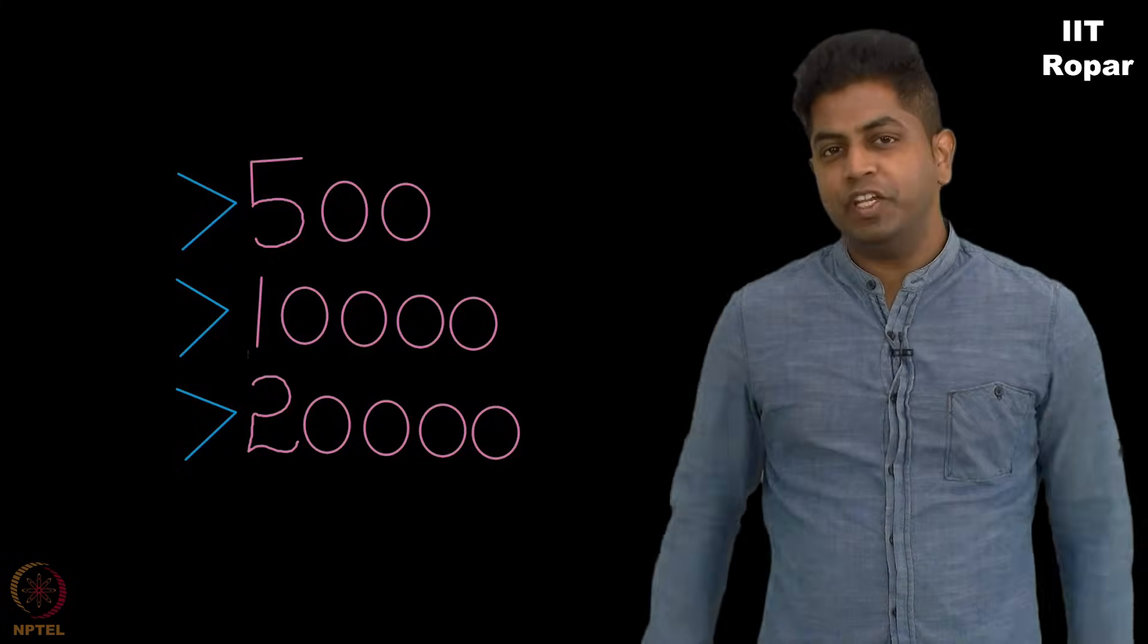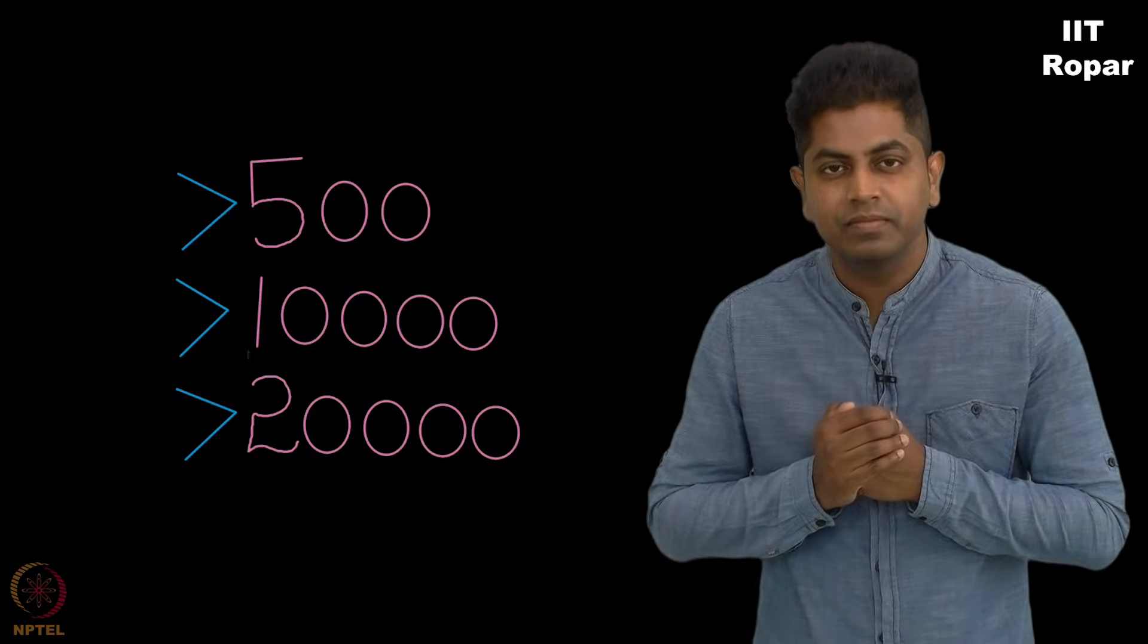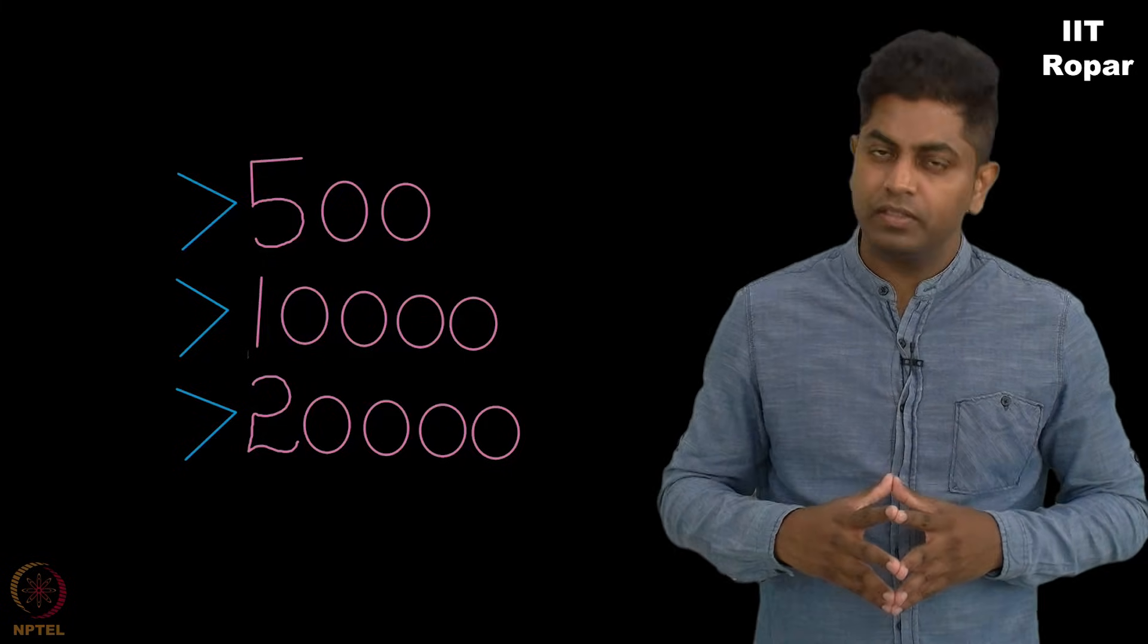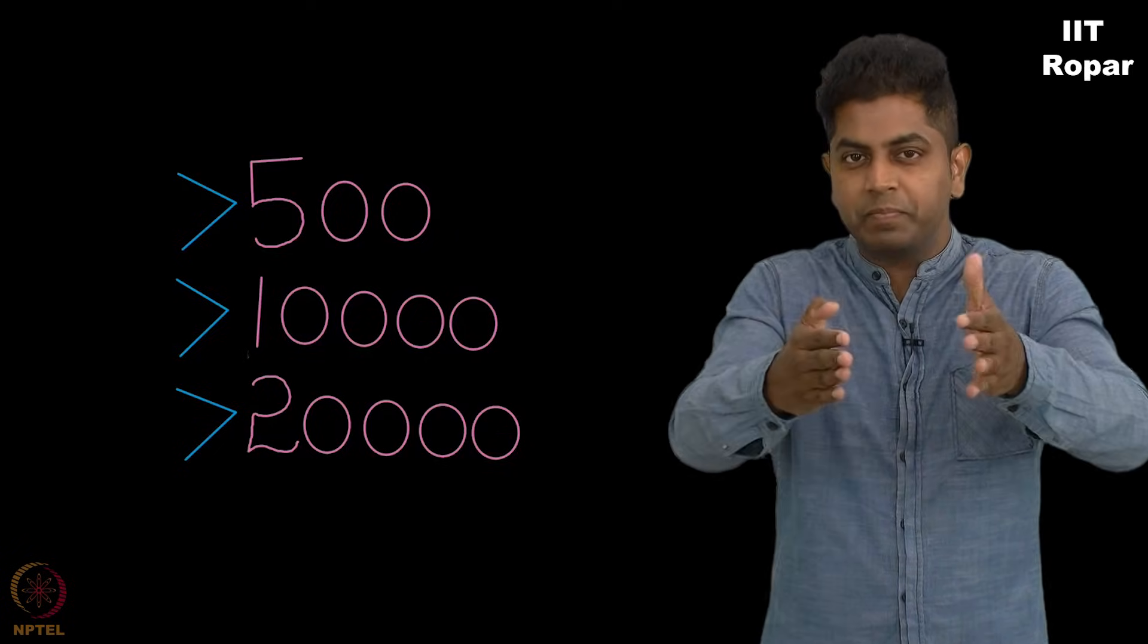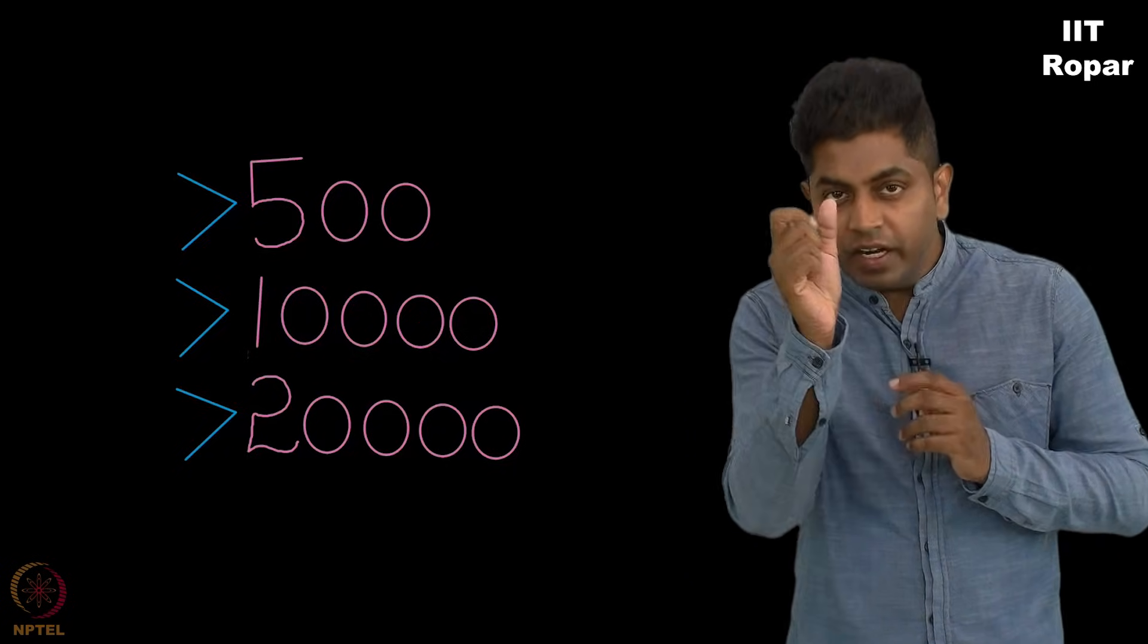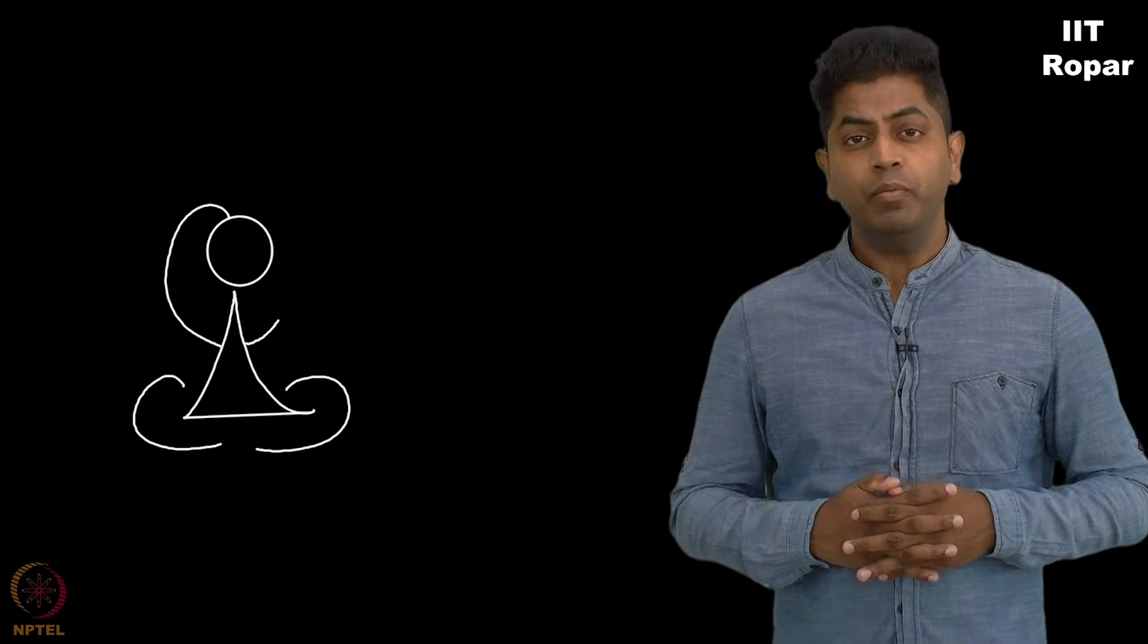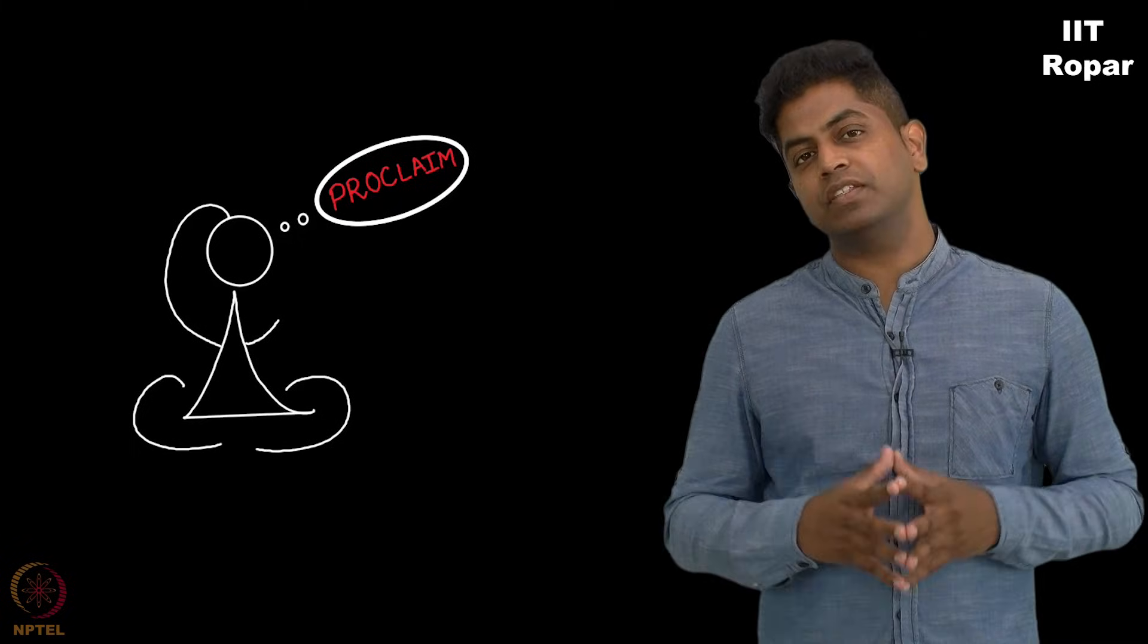I am going to tell you something which looks like it's very different from the game that I have been discussing: a number between one to one lakh, guess what the number is. I am going to give you an example which looks very different but these two things are the same. The example is that of how do you search for a word in an English dictionary. Let's say you want to see the word proclaim, p-r-o-c-l-a-i-m. How will you search for this in the dictionary?